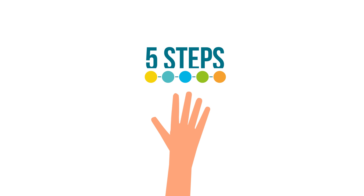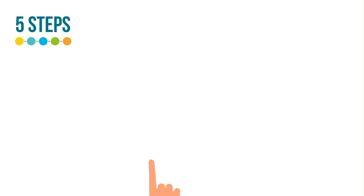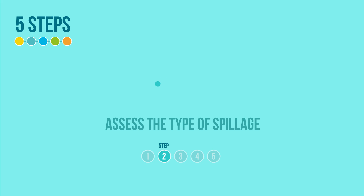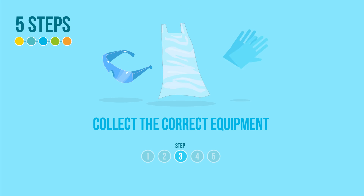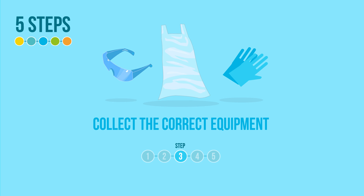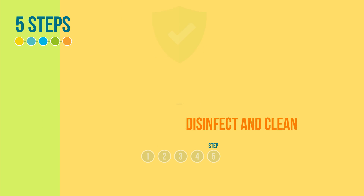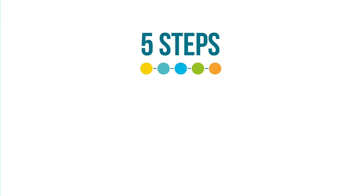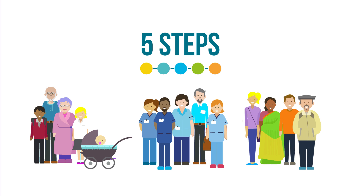There are five steps necessary to successfully manage a spillage. Step 1: cordon the spillage off. Step 2: assess the type of spillage — the algorithm will help you here. Step 3: collect the correct equipment. Step 4: protect yourself. Step 5: disinfect and clean. Following these steps ensures no harm comes to those we care for, other staff, visitors and ourselves.